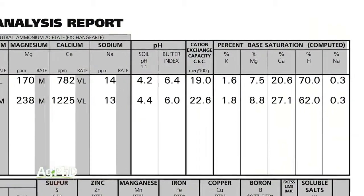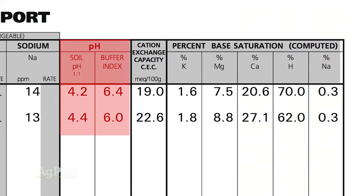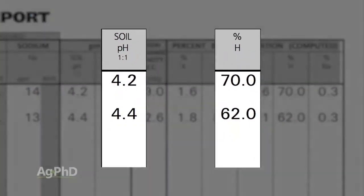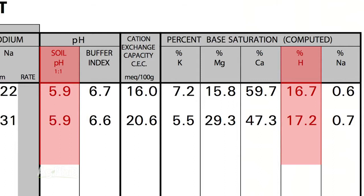First of all, to identify this issue, you need a soil test. You're going to look at two things: the soil pH, but we also want you to look at what your base saturation hydrogen number is. The only reason a soil has hydrogen is if the pH is below 7. The higher that base saturation hydrogen number, the lower your pH, and that should correlate with that soil pH number being low on your soil test.